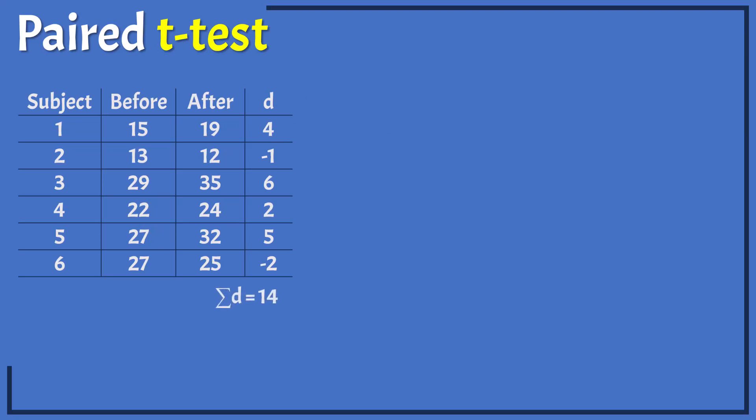The sum of the differences here is 14, and the number of differences is 6. Therefore, the mean of the sample differences is 2.333.